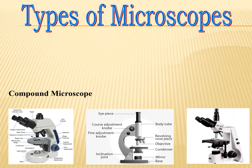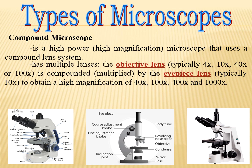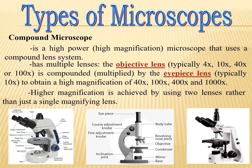Types of microscope: We have the compound microscope, a high-power or high-magnification microscope that uses a compound lens system with multiple lenses. The objective lens — typically 4x, 10x, 40x, or 100x — is compounded and multiplied by the eyepiece lens, typically 10x, to obtain high magnifications of 40x, 100x, 400x, and 1000x. Higher magnification is achieved by using two lenses rather than just a single magnifying lens.